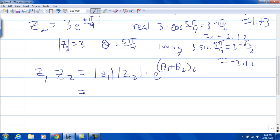So our z1 was a 2, our z2 was a 3, times e to the pi over 3 plus 5 pi over 4 times i. So it's going to be 6 times e to the common denominator is going to be 12, so that's going to be 4 pi over 12 plus 15 pi over 12 times i. And that's going to be 6e to the 19 pi over 12.